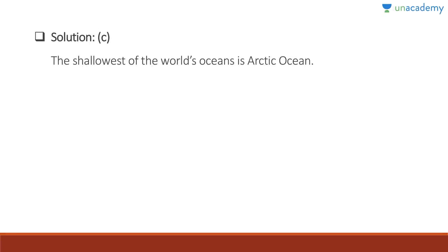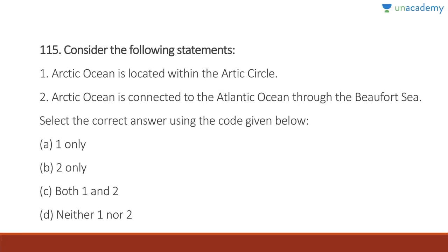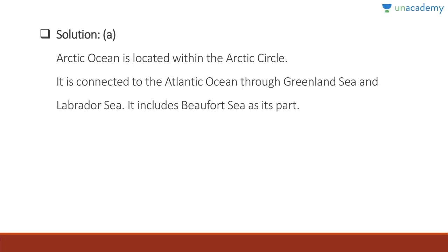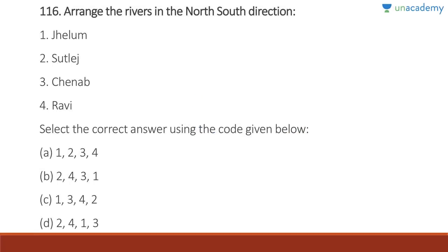Question 114: The shallowest of the world's oceans is the Arctic Ocean, which has the least depth. Question 115: The Arctic Ocean is located within the Arctic Circle — absolutely correct. The Arctic Ocean is connected with the Atlantic Ocean through the Beaufort Sea — wrong; it is connected through the Greenland Sea and Labrador Sea, and includes the Beaufort Sea as part of it. Answer is A, one only.